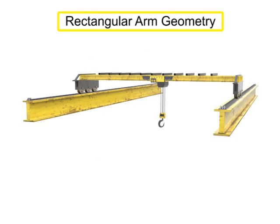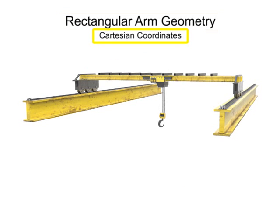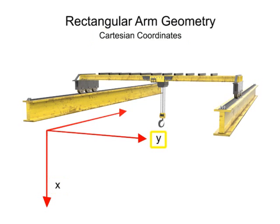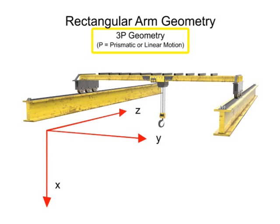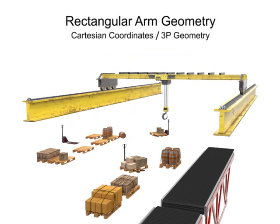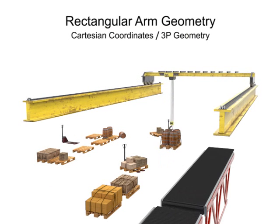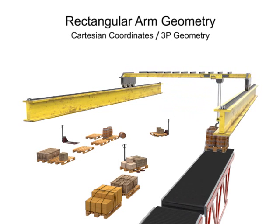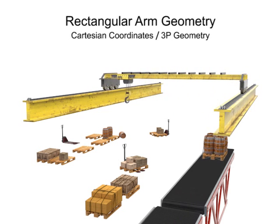Robots with rectangular arm geometry use Cartesian coordinates and move linearly along each of the X, Y, and Z axes. This type of movement is also called 3P geometry, where the P stands for prismatic or linear motion. This type of geometry is most commonly used with pick-and-place or large overhead-mounted robots.